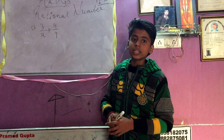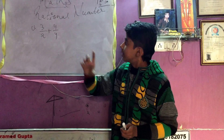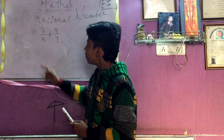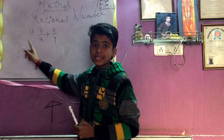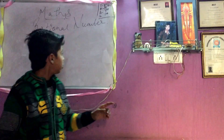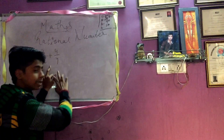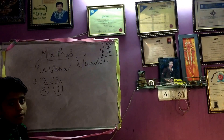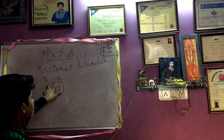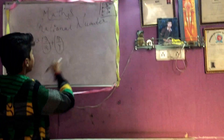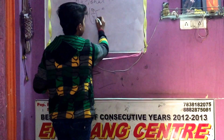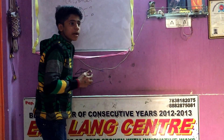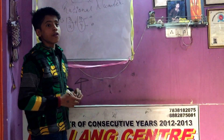Let me also confirm that the same question may not appear exactly, but a question of this type will be in your book. Now let me explain how to solve this. In a fraction, the upper side of the numbers is called the numerator, and the below side is called the denominator.